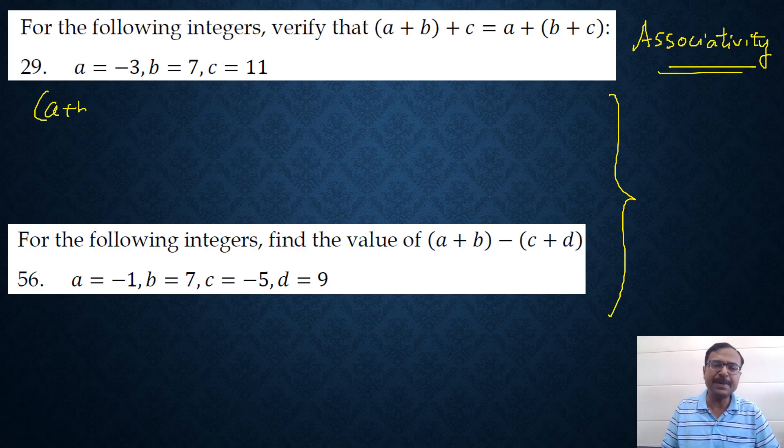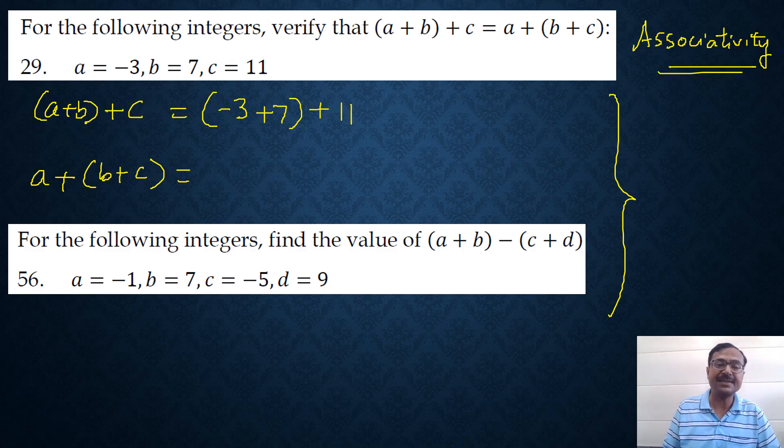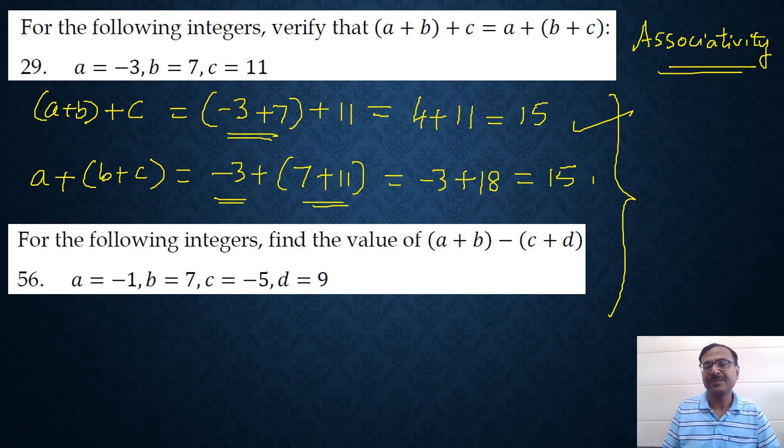So what is associativity? If you add A plus B and then add C to that or if you add A to the sum of B and C, see the use of brackets there. We are adding A and B first, so A is minus 3, B is 7 in this case and then adding C that means 11 to that and in the second case A is minus 3, so plus B plus C that is 7 plus 11. Let's see what happens. So obviously, BODMAS says you have to solve the brackets first, minus 3 plus 7 is 4, so 4 plus 11 is going to give you 15, likewise minus 3 plus what is 11 plus 7, it's 18 and minus 3 plus 18 is again plus 15. So you can see in case of integers, the associative property holds good. A plus B plus C is equal to A plus B plus C.